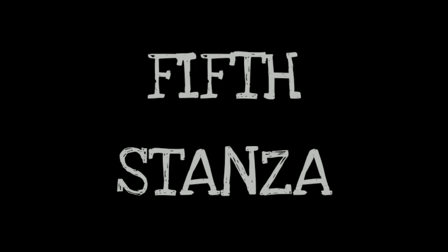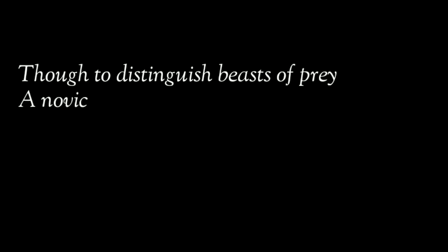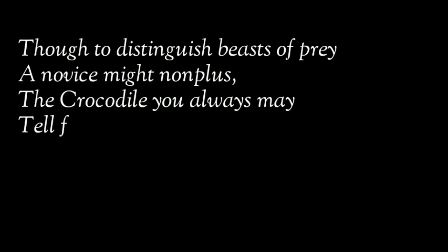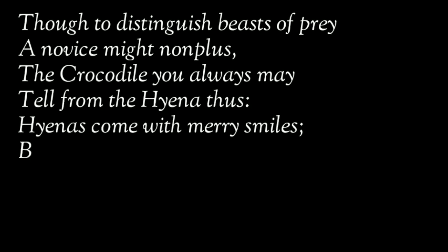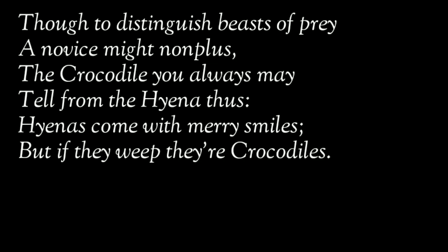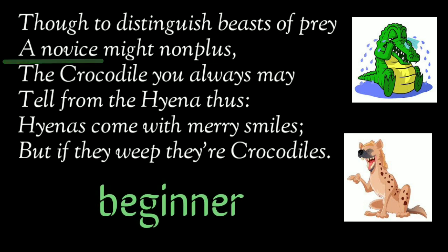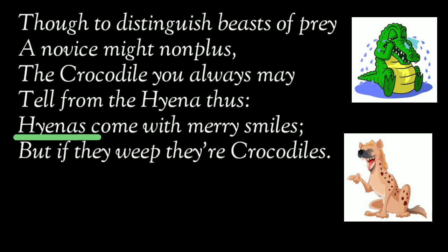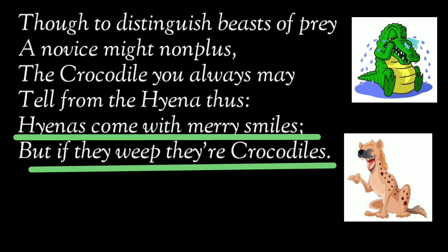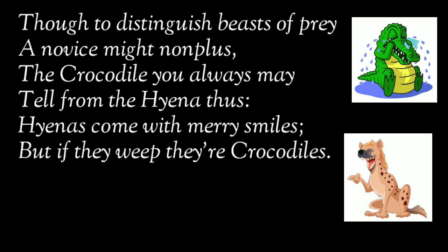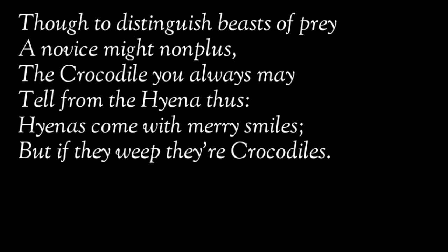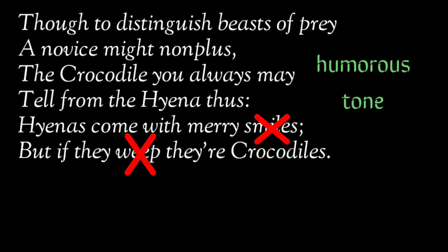The fifth stanza goes: 'Though to distinguish beasts of prey, a novice might non-plus, the crocodile you always may tell from the hyena thus: hyenas come with merry smiles, but if they weep, they are crocodiles.' The poet presents a contrast between a hyena and a crocodile. Even a novice can identify them from their distinct habits — a hyena seems to smile while gobbling its prey, whereas a crocodile sheds tears profusely. The poet continues the humorous tone, as hyenas never smile happily nor are the tears of crocodiles genuine.